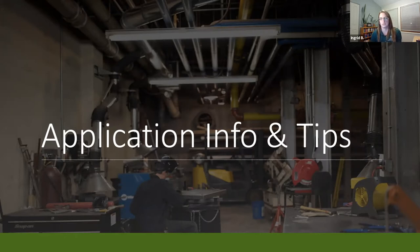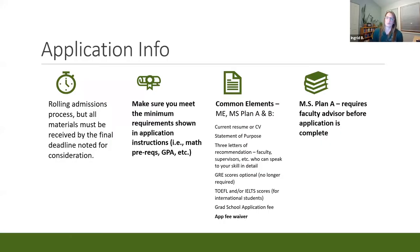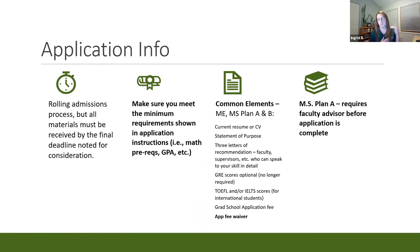If you're thinking about applying, on our website we have application checklists and instructions — a PDF that walks you through all the minimum requirements including math prerequisites and GPA requirements. On the second page it starts a detailed step-by-step checklist of how to apply and what to submit for a complete application. I'd recommend downloading that PDF and following it carefully. In terms of timeline, our master's programs have a rolling admissions process — when you submit a fully complete application, we can usually get you an admissions decision within about one to two weeks.